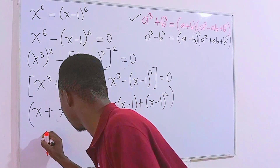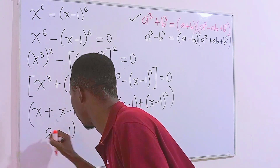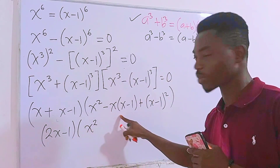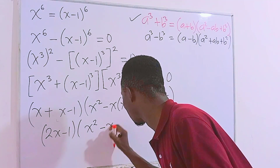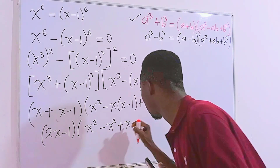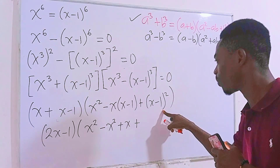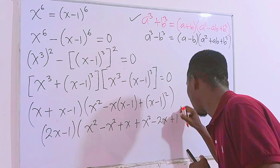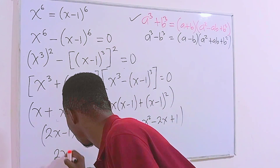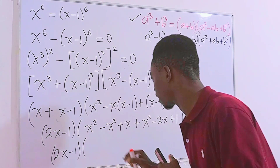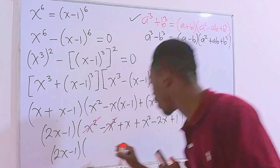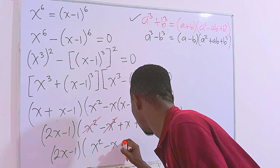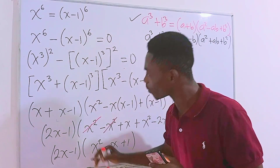Let's simplify. x plus (x minus 1) gives us 2x minus 1. Now for the second factor: we have x squared, then expanding minus x(x minus 1) gives minus x squared plus x, then expanding (x minus 1)² gives x squared minus 2x plus 1. The x squared terms cancel, leaving x squared, then x minus 2x is minus x, then plus 1. So the two factors are (2x minus 1) and (x² minus x + 1).